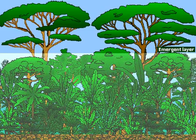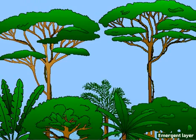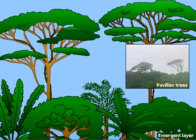Rainforest vegetation is often divided into layers. The very top layer, the emergent layer, is so-called because trees emerge randomly from the main forest roof. Most of the trees at this level reach 160 feet, but some reach heights of 200 feet or more.